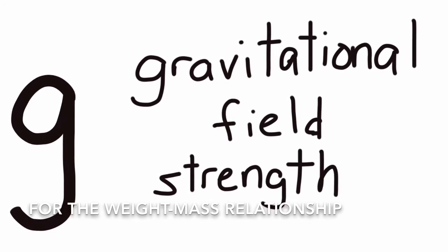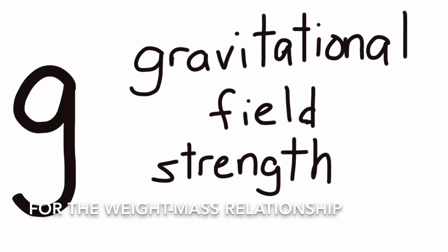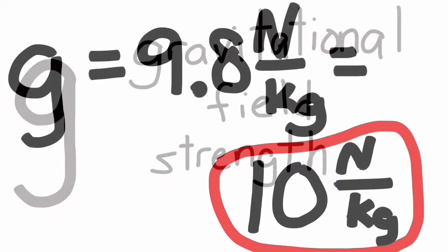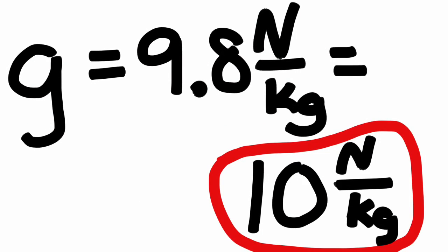Here's one. Use gravitational field strength for W equals mg rather than the other thing. And use 10. 10's a whole lot simpler. Let's go.